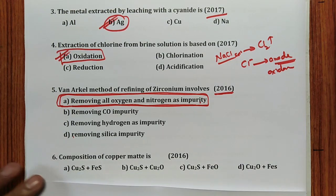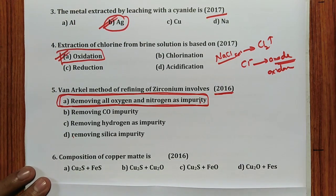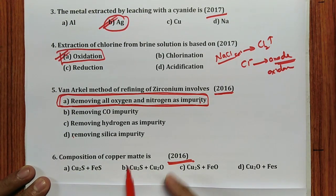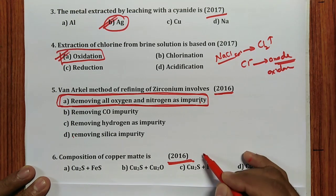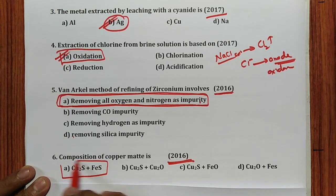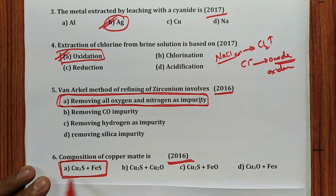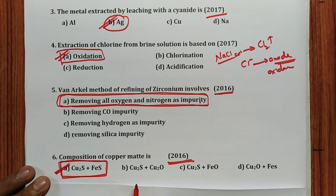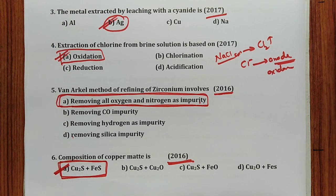Question 6: Composition of copper matte — very important, asked in JEE also. Copper matte is Cu₂S and FeS. Remember: Cu₂S and FeS is known as copper matte.